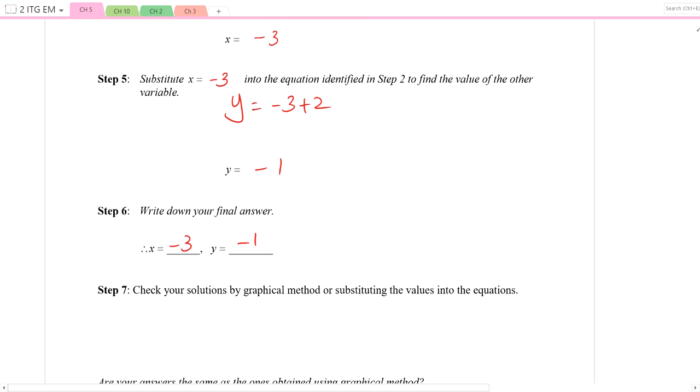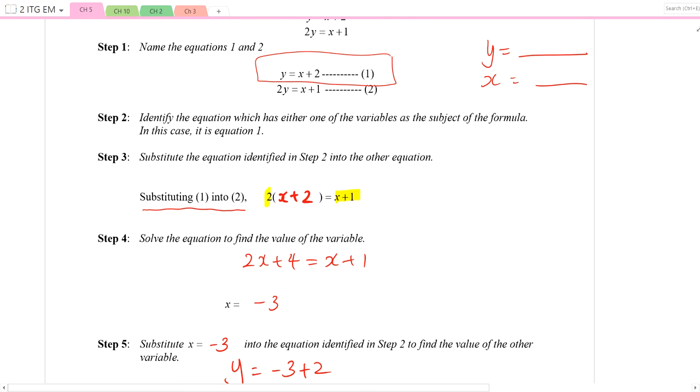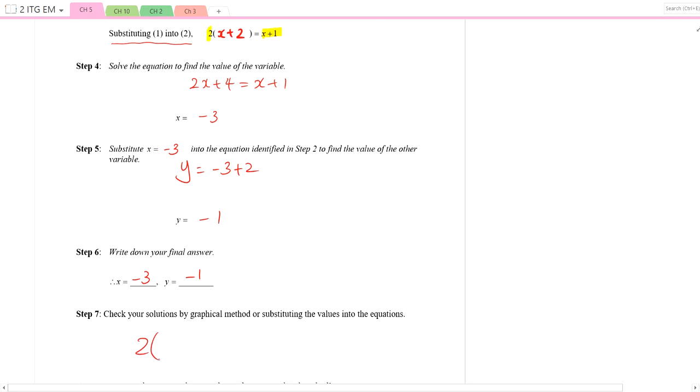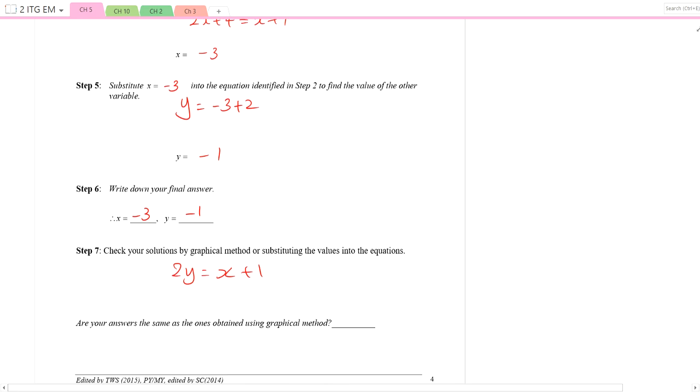Next, we check our solutions by substituting them into the original equation. I will substitute into equation 2 for checking purposes. Equation 2 says 2y equals x plus 1. Left-hand side, when I substitute y equals negative 1, I get negative 2. Right-hand side, when I substitute x equals negative 3, I have negative 3 plus 1, which equals negative 2, the same as the left-hand side. So my answers are correct.